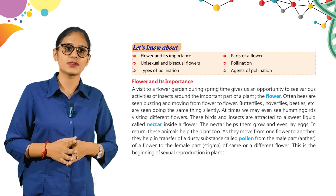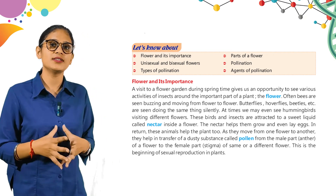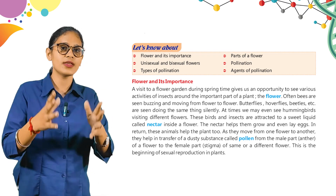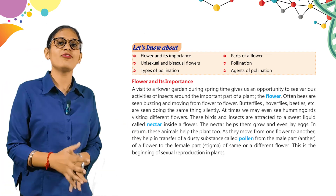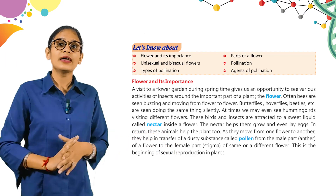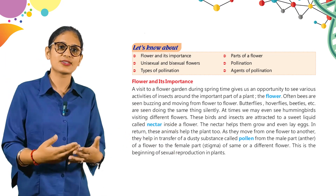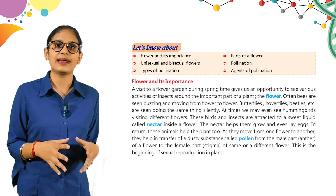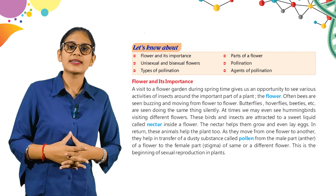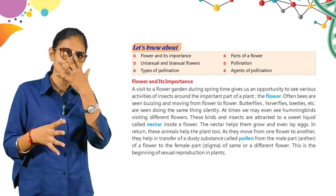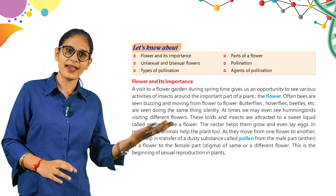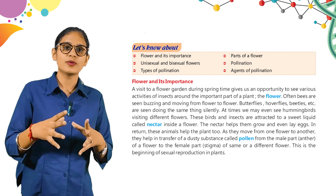The first topic is flower and its importance. A visit to a flower garden during spring gives us an opportunity to see various activities of insects around the important part of a plant — the flower. Bees are often seen buzzing and moving from flower to flower. Butterflies, hoverflies, beetles, etc. are seen doing the same thing silently. At times, we even see hummingbirds visiting different flowers. These birds and insects are attracted to a sweet liquid called nectar inside a flower. The nectar helps them grow and even lay eggs. In return, these animals help the plant too.